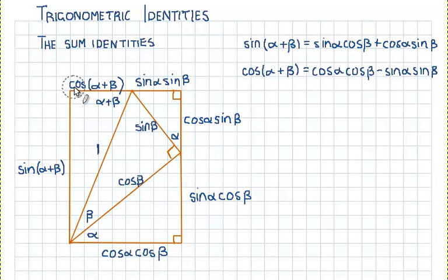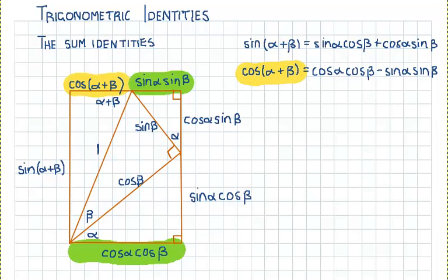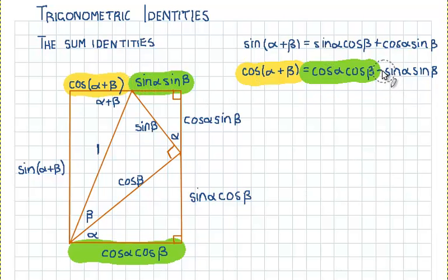The value for cos(α + β) is equal to the length of this side take away the length of this other side. So cos(α + β) = cos α cos β − sin α sin β. And that is the proof for those two trigonometric identities.